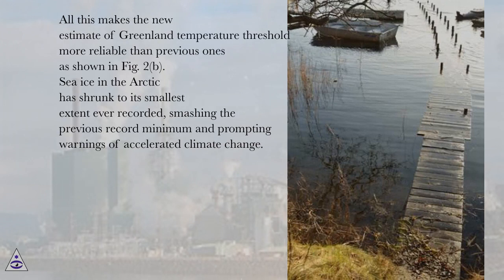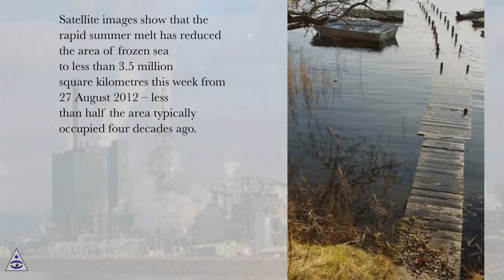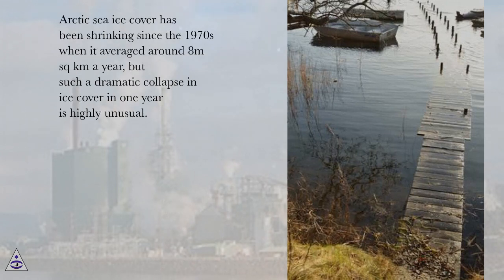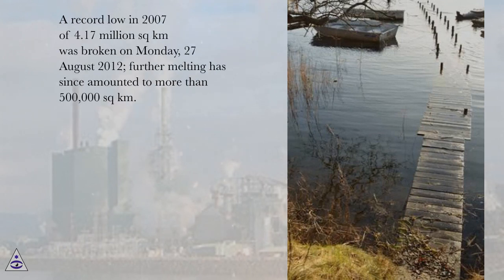Sea ice in the Arctic has shrunk to its smallest extent ever recorded, smashing the previous record minimum and prompting warnings of accelerated climate change. Satellite images show that the rapid summer melt has reduced the area of frozen sea to less than 3.5 million square kilometers as of the week of August 27, 2012 — less than half the area typically occupied four decades ago. Arctic sea ice cover has been shrinking since the 1970s when it averaged around 8 million square kilometers a year, but such a dramatic collapse in ice cover in one year is highly unusual. A record low in 2007 of 4.17 million square kilometers was broken on Monday August 27, 2012, with further melting amounting to more than 500,000 square kilometers.